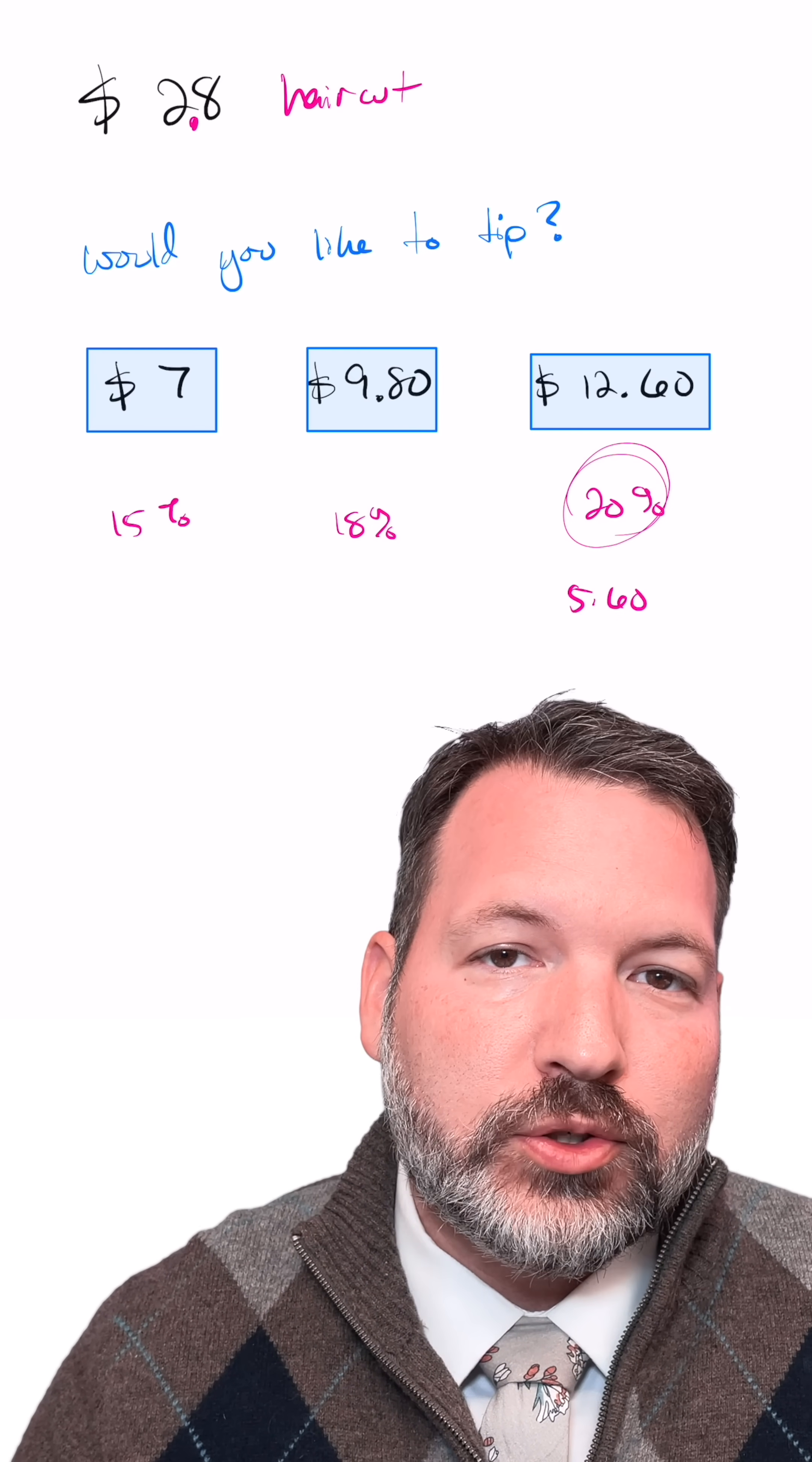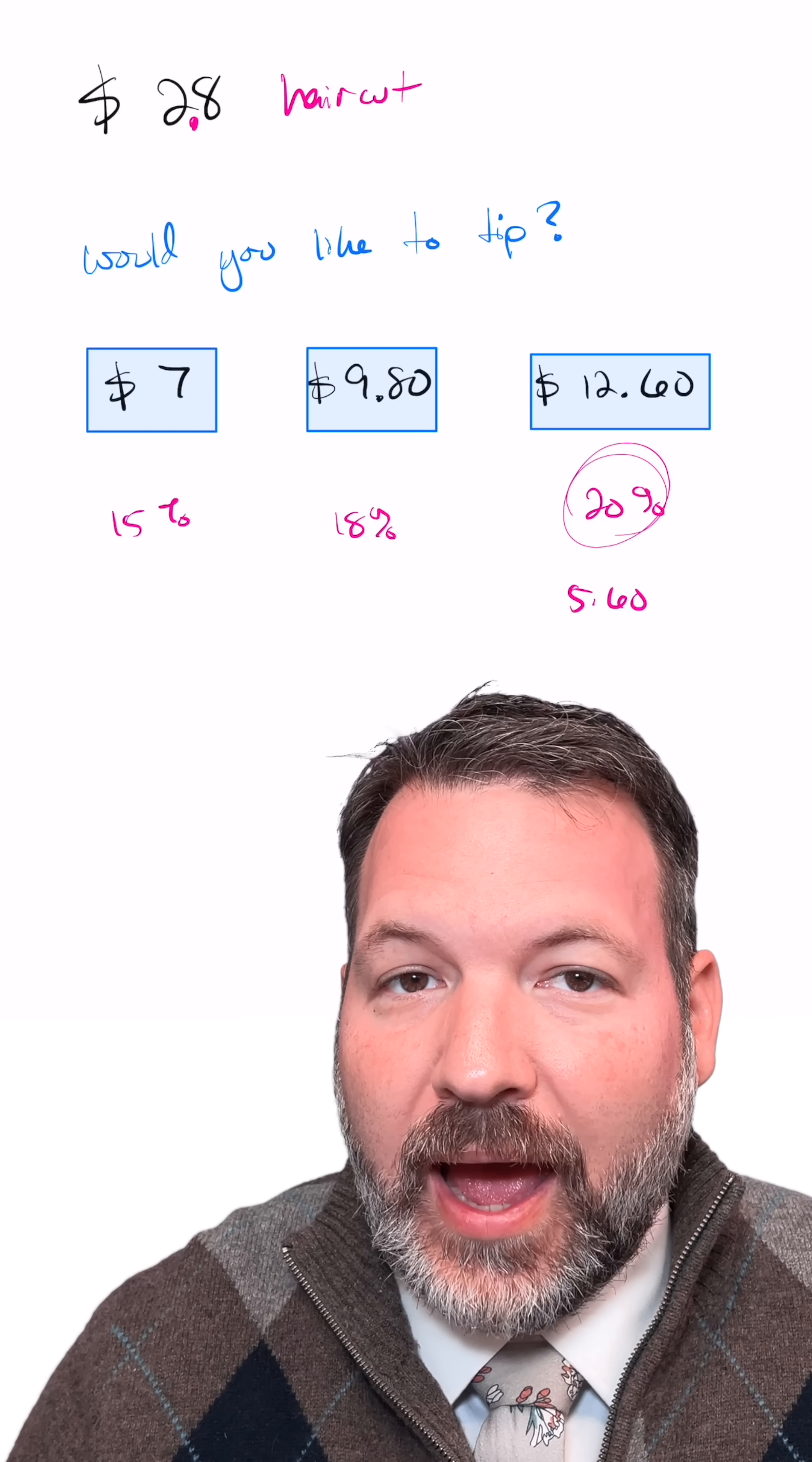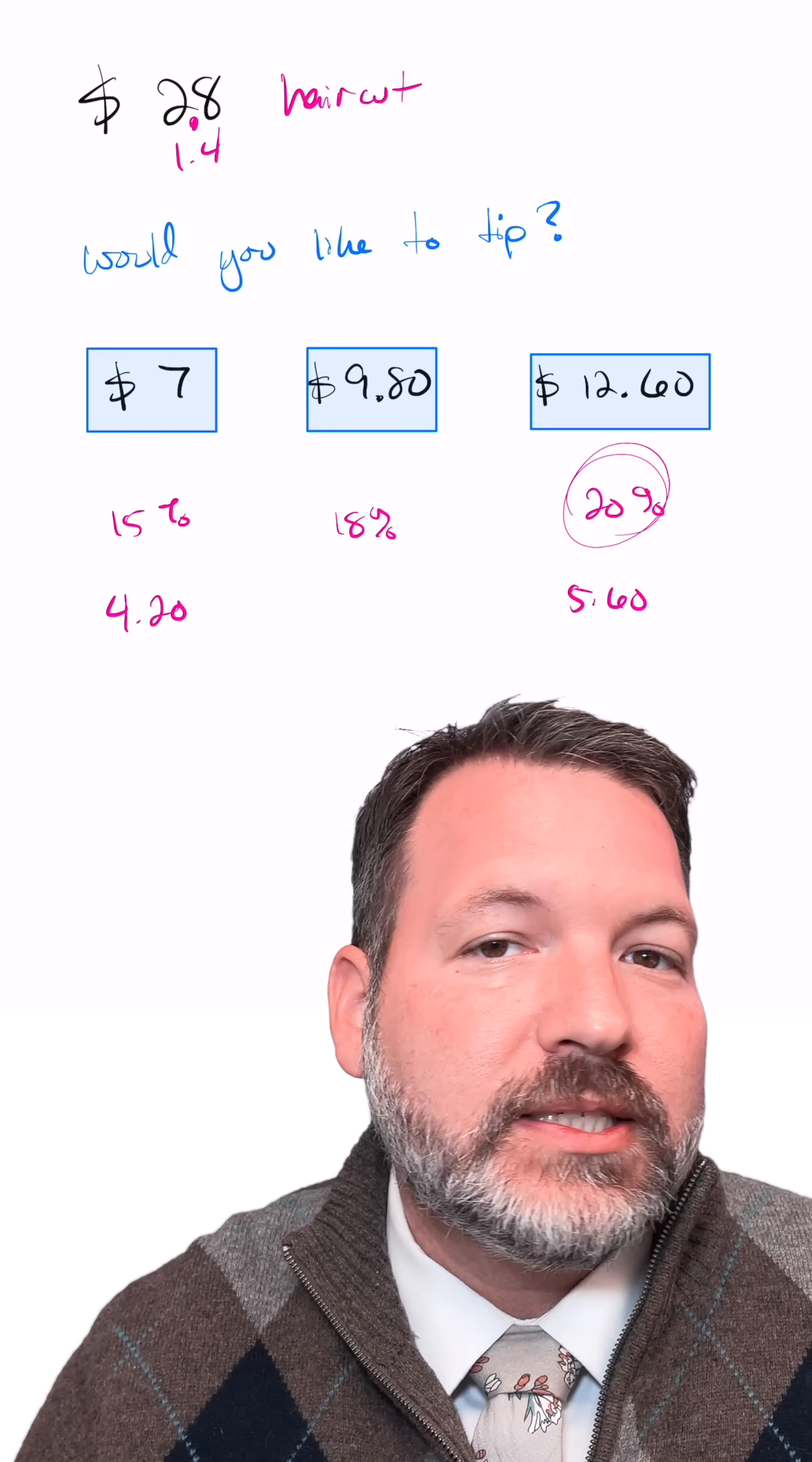For that matter, there's a related trick for 15%. You would take that 10% amount, $2.80, cut that in half, that's $1.40, and then just add those two things together. So $2.80 plus $1.40 means I should be tipping $4.20 at the low end.